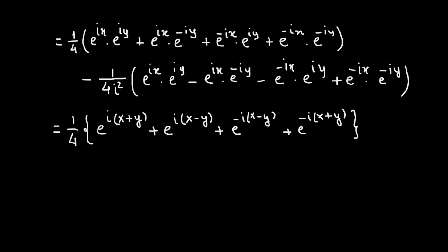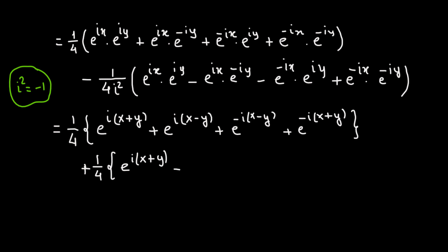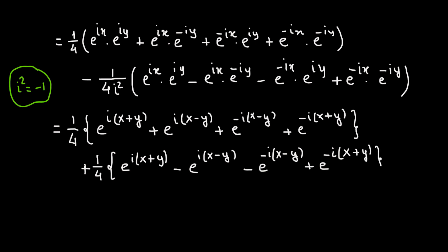Moving to the second term: we have negative 1 over 4i squared. Since i squared equals negative 1, this becomes positive 1 over 4, times e raised to the power of i times x plus y, minus e raised to the power of i times x minus y, minus e raised to the power of negative i times x minus y, plus e raised to the power of negative i times x plus y.